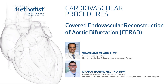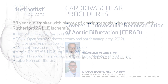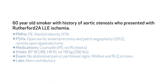Our patient is a 60-year-old smoker with a history of aortic stenosis who presented to our institution with Rutherford 2A left lower extremity ischemia. His past medical history was significant for a pulmonary embolism; however, he was non-compliant with anticoagulation. He also was morbidly obese with a BMI of 41.